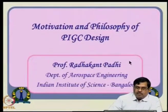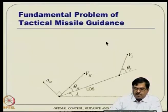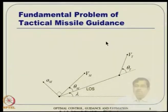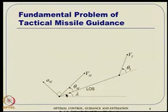So, what is the motivation and philosophy of partial IEGC? This is a typical guidance scenario, clear from the guidance lecture as well. We have a missile and a target going its own way, and the missile is changing direction. If the missile continues in a given direction, it may miss the target. There will be some direction correction such that the LOS vector does not rotate, leading to a collision triangle.